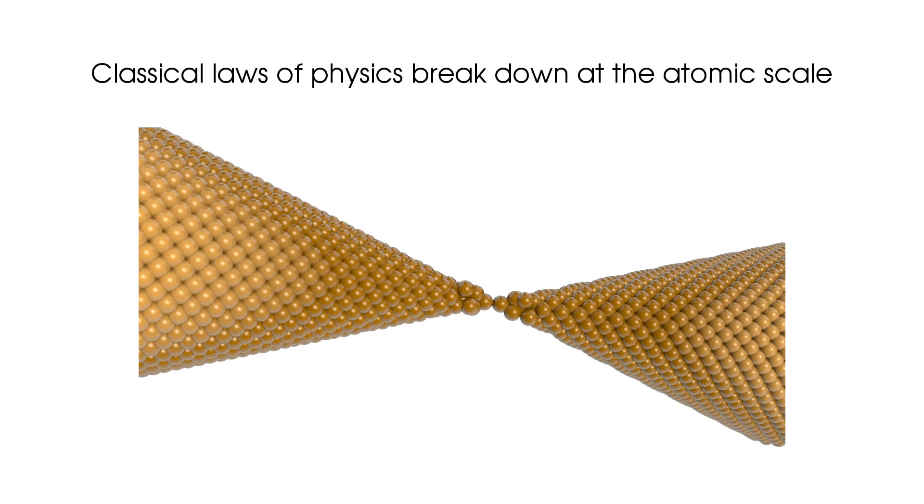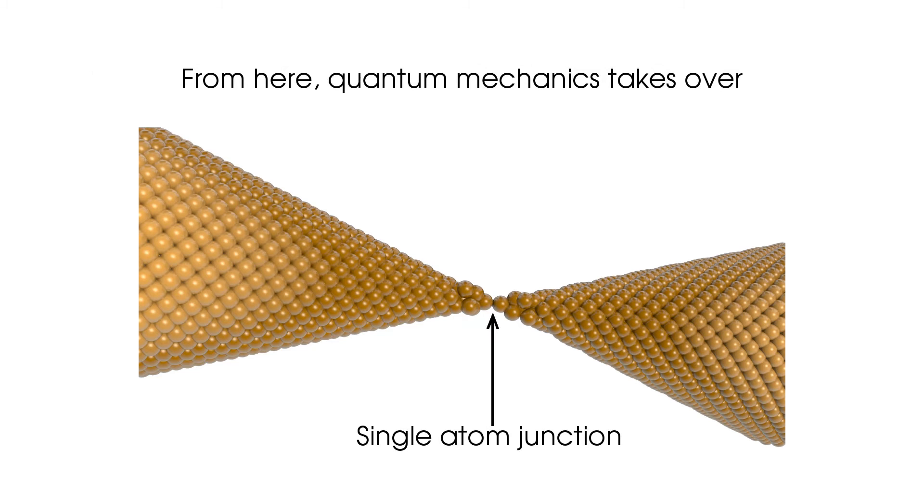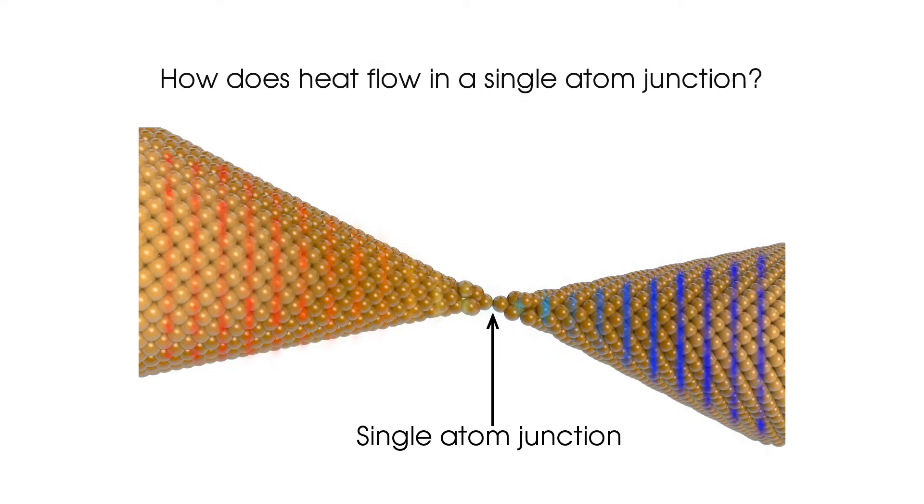Classical laws of physics break down at the atomic scale. From here, quantum mechanics takes over. How does heat flow in a single atom junction?